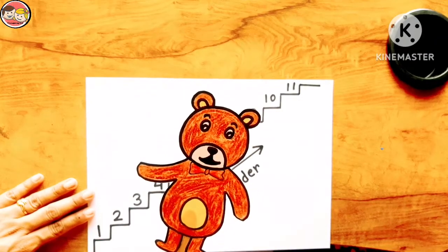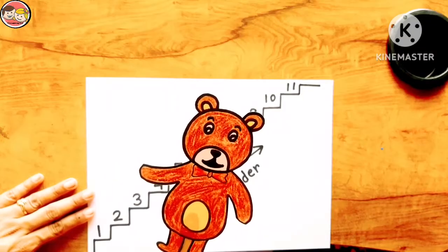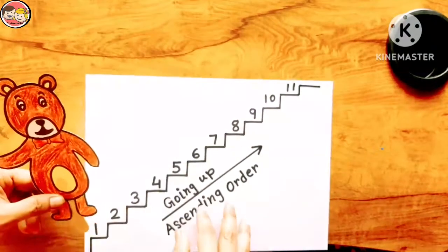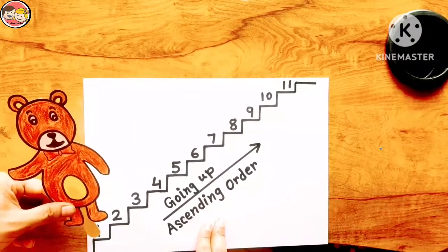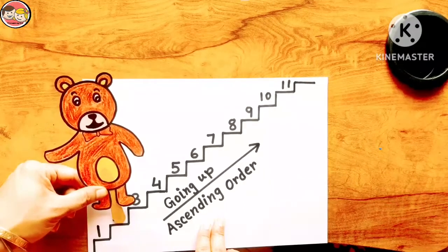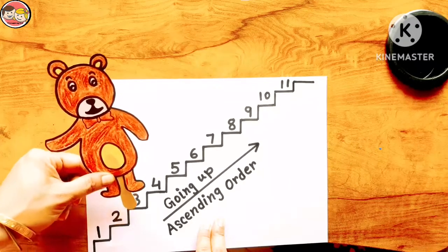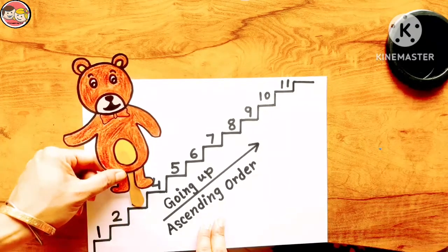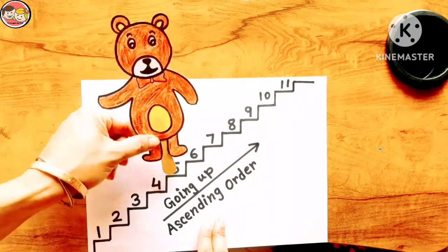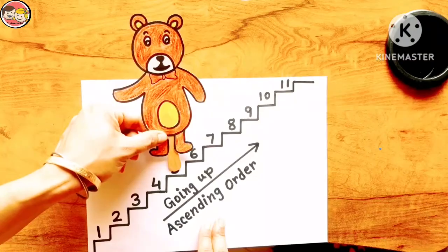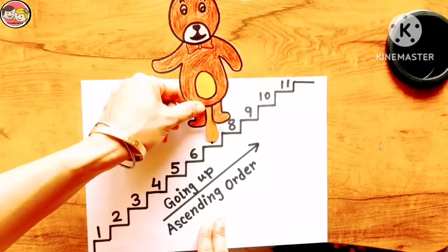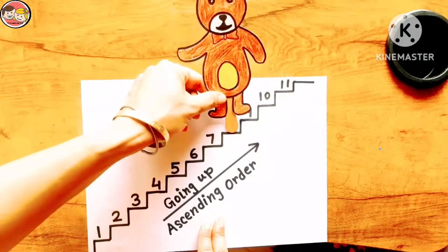Now Billu will climb up the stairs one by one. Billu starts climbing from number one, then two, three, four, five, six, seven, eight.